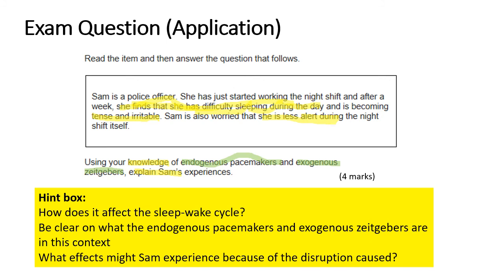Think about all we have learned based on endogenous pacemakers and exogenous zeitgebers and their influence on our sleep-wake cycle. Why is Sam experiencing difficulties? Pause, answer the question, and then we'll come to some answers.